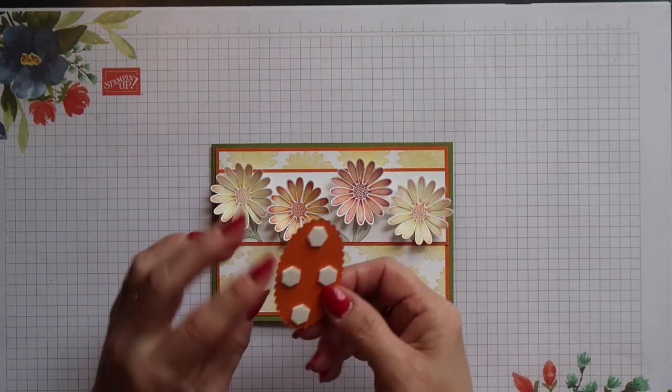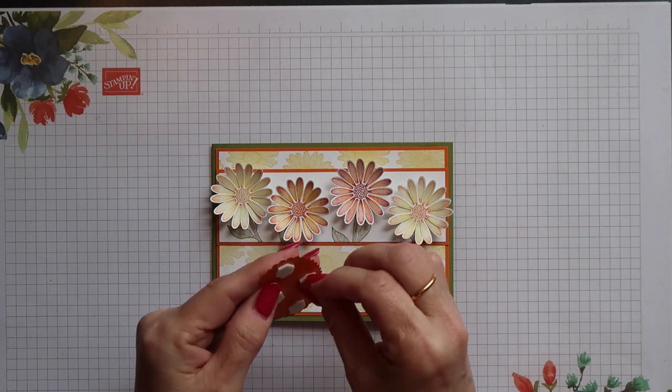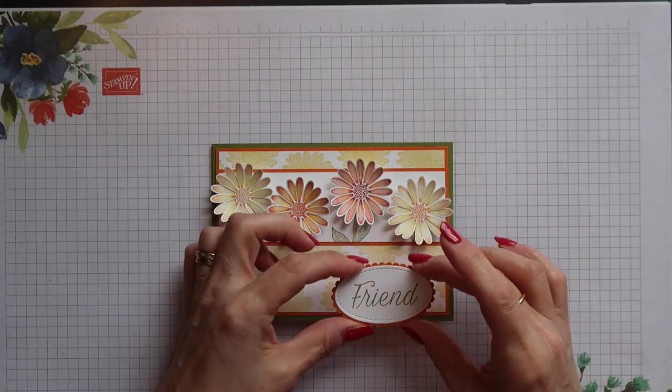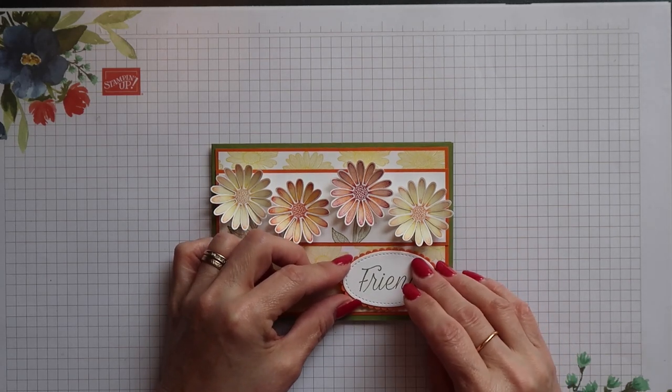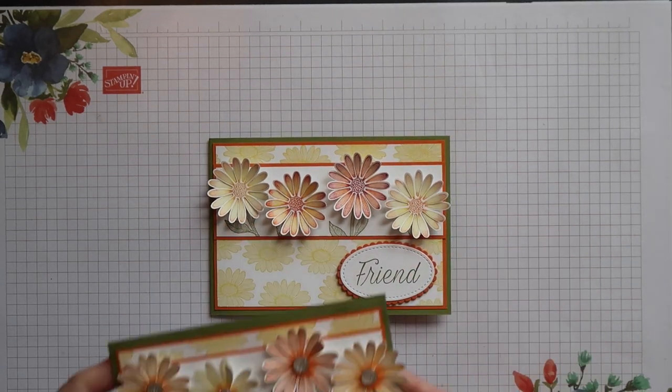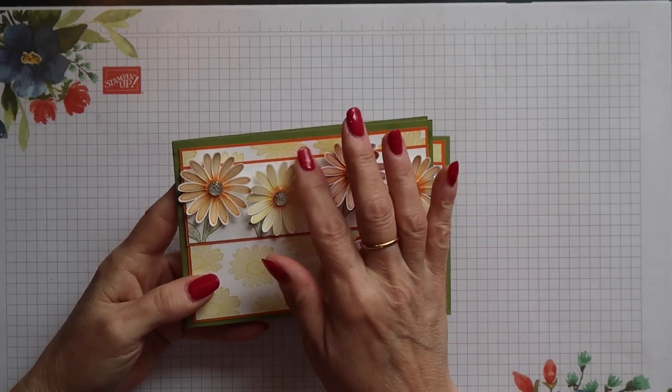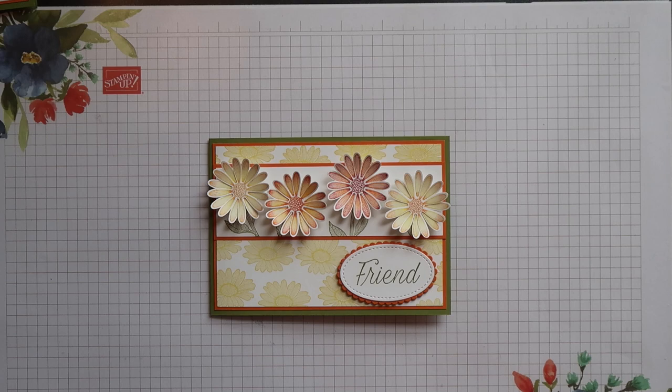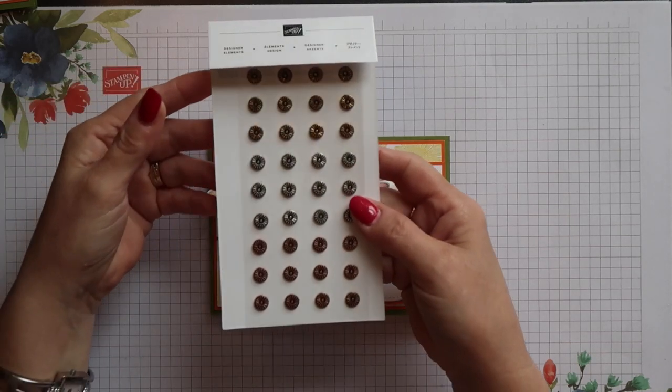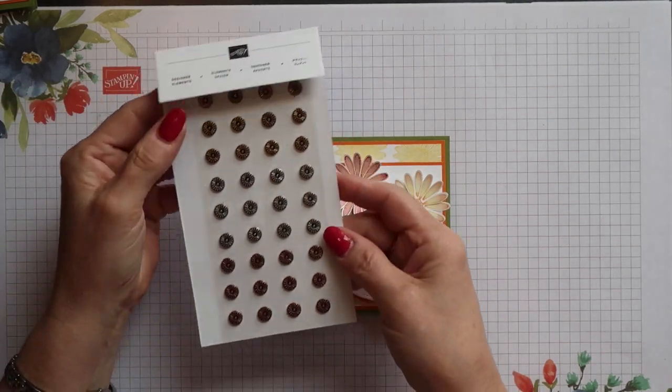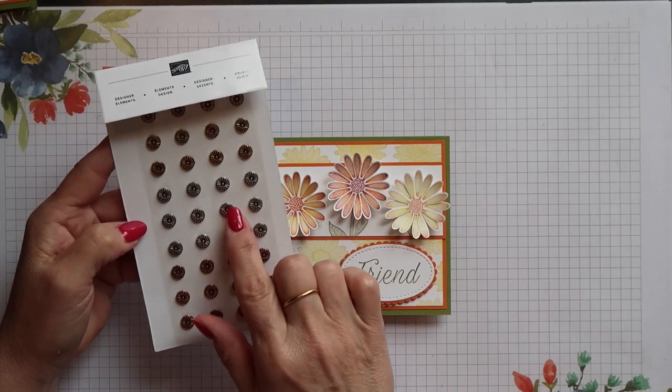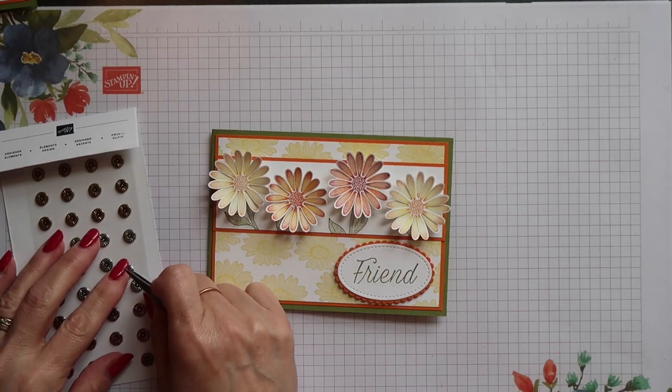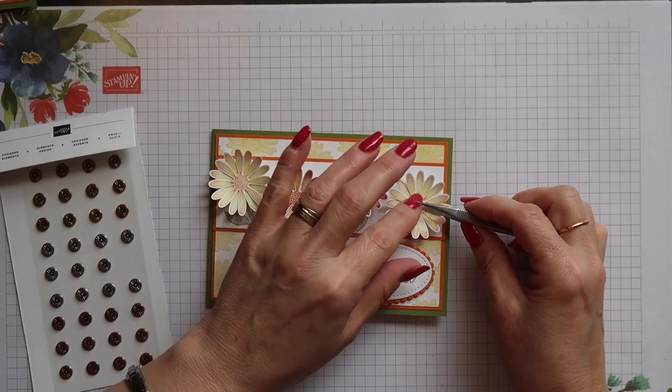I can now position the friend sentiment panel onto the front of the card. To finish off the flowers on my original card I added some of our clear faceted gems but I'm going to use our new designer elements this time. These come in three antiqued finishes, copper, gold and silver and I'm going to use the silver ones.